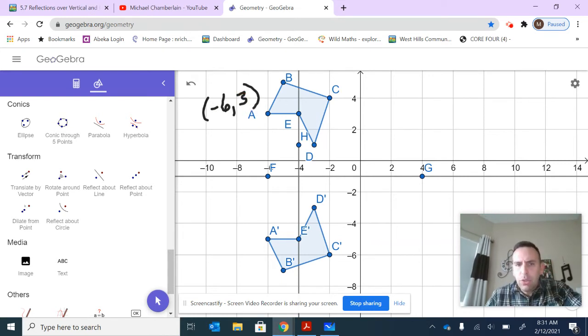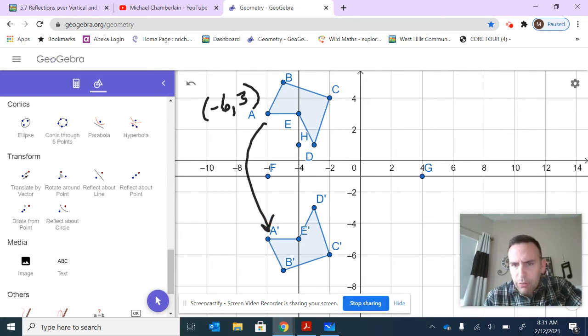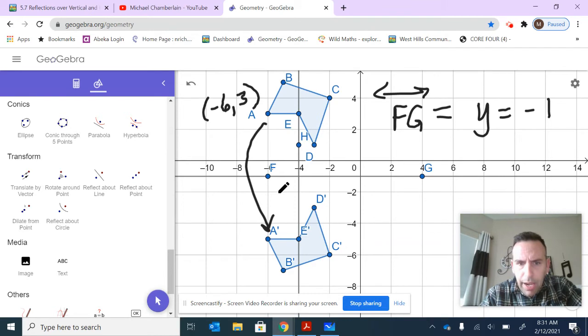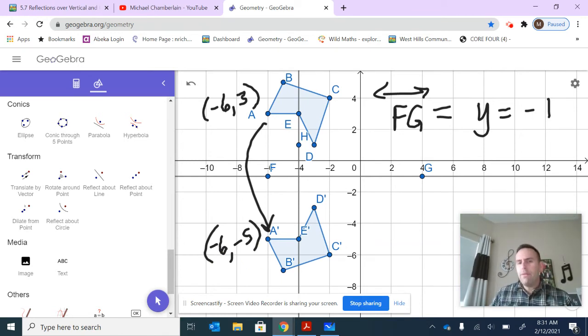And where did it go to? If we think about where it went to down here. When I reflected it across this line, the line is FG. So we better write down what this line is. FG is the line at y equals negative one. If we look at the point A prime, what we notice is it's still back six, but now it's down negative five. So what happened is the y-value changed.